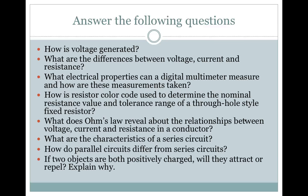Answer the following questions in your engineering notebook. How is voltage generated? What are the differences between voltage, current, and resistance? What electrical properties can a digital multimeter measure and how are these measurements taken? How is resistor color code used to determine the nominal resistance value and tolerance range of a through-hole style fixed resistor? What does Ohm's Law reveal about the relationships between voltage, current, and resistance in a conductor? What are the characteristics of a series circuit? How do parallel circuits differ from series circuits? If two objects are both positively charged, will they attract or repel, and why?